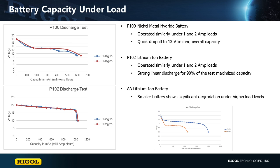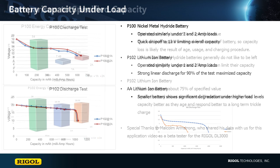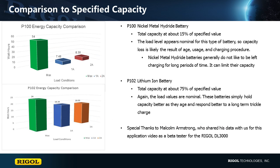Now let's compare these results to the specifications for the batteries. Here we see that the nickel metal hydride batteries are only operating at about 15% of their specified capacity. This is largely due to their age and the charging cycles.